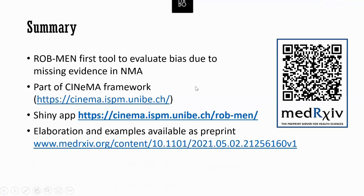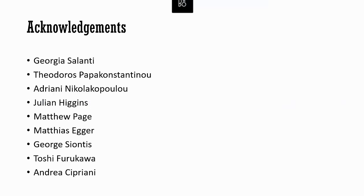In summary, I presented the first tool and framework to evaluate bias due to missing evidence in a network of interventions. This is also part of the CINEMA framework — the framework to evaluate confidence in network meta-analysis results. The Shiny app is already available at the link, and more details on how to run the process and evaluation are available in a medRxiv preprint with examples also referring to the app. Finally, I want to thank all the collaborators who helped with this project, and thank you for your attention.